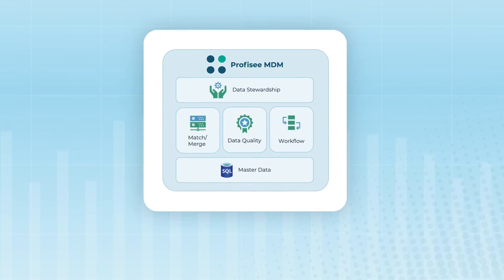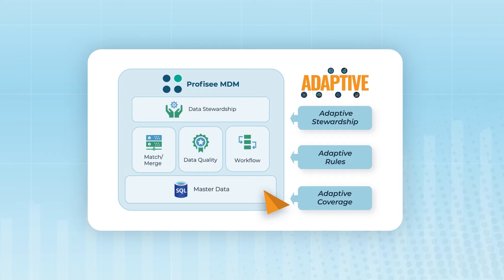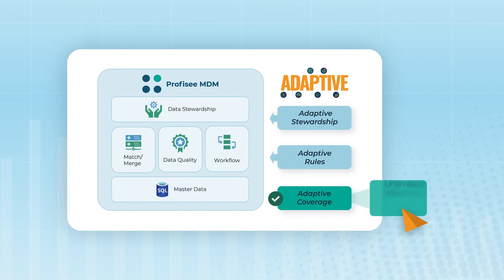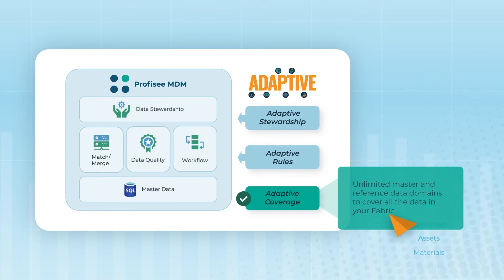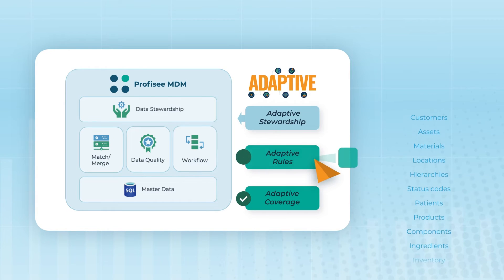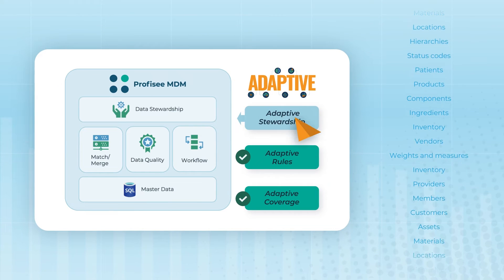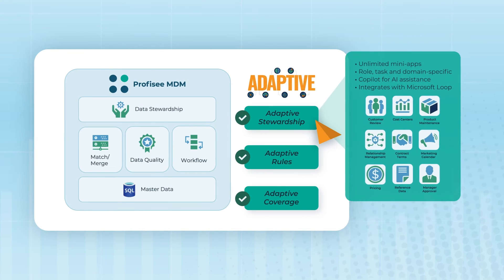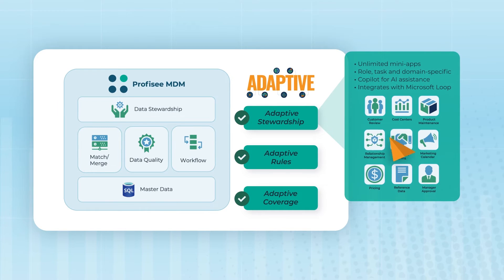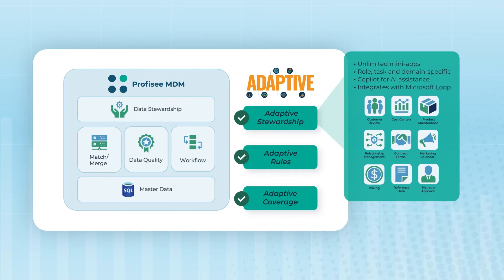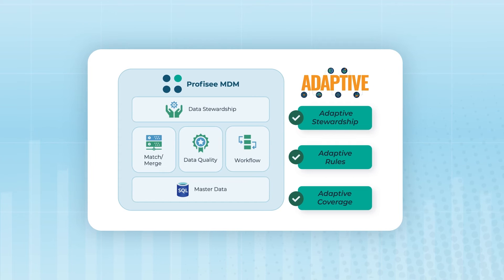But Prophecy MDM takes a different approach. It is adaptive and designed to adapt to your data, allowing as many master and reference data domains as you need to cover your whole data fabric. Your governance rules to match, standardize, and verify your data, and engage your data stewards with a streamlined and efficient user experience to correct and verify data as required. With an adaptive approach to MDM, both implementation and use are easier and more intuitive, while allowing for complete coverage of your data estate.